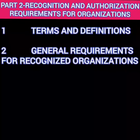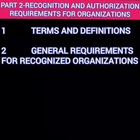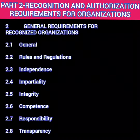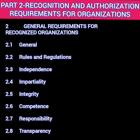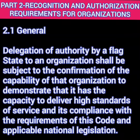Skipping to part two, which is recognition and authorization requirements for the organization. It starts with terms and definitions in the first chapter, then talks about the general requirements for recognized organizations, which I want to discuss in more detail. There are eight points mentioned in part two for any organization which wishes to become a recognized organization for a flag state. Starting with the first point, which is general — if the flag state wants to hand over the responsibility to a certain organization to carry out this job, then the organization must ensure that it has the capability to carry out the assigned task and has the capacity to deliver high standards of service and compliance.